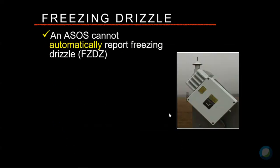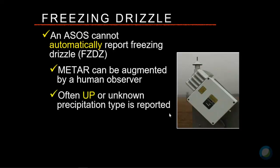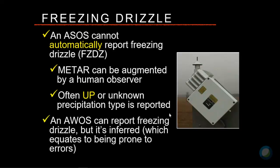ASOS stations cannot automatically report freezing drizzle — AWOS can, but it's inferred: it's drizzling and the temperature is below freezing, therefore it's freezing drizzle. Anytime you see an ASOS report freezing drizzle, it's been augmented by a human observer. The ASOS for freezing rain actually allows liquid to freeze onto a probe, then melts and refreezes, so it can reliably sense freezing rain. But for freezing drizzle, no good automated indicator exists. If you see unknown precipitation type from an ASOS, that may indicate a freezing drizzle case.